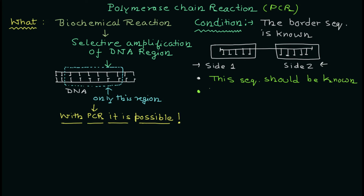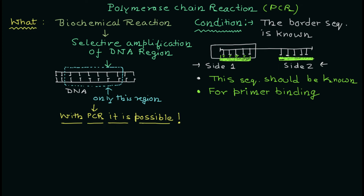The region present between these two side sequences will be amplified, and those known sequences are where the primer is going to bind. The primer — shown here in green — binds to side A, and the second primer binds to the other strand, because DNA is a double-stranded molecule. The second adapter will bind to the second strand. I'll show this in more detail in a later section of this video.